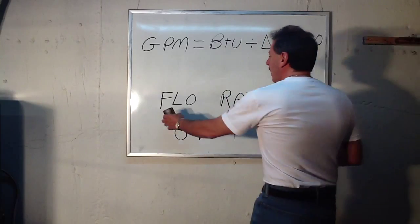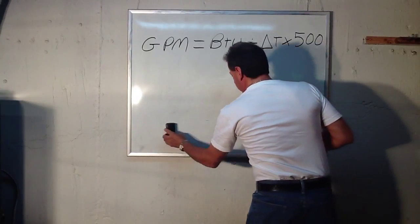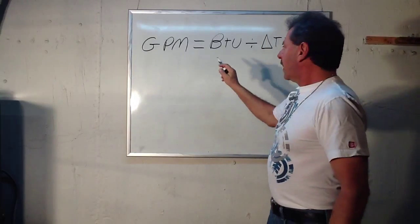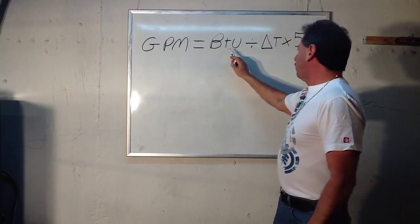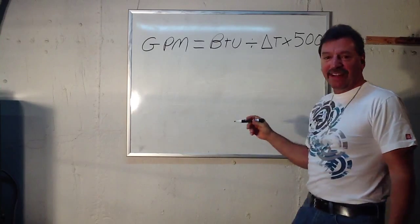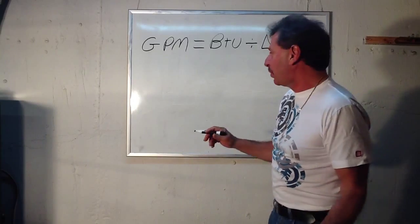That's what we're going to find. And there's a simple math equation that'll do that. Gallons per minute equals BTUs divided by the delta T times 500. I know it sounds like a boatload of information, but I can promise you it's pretty easy.